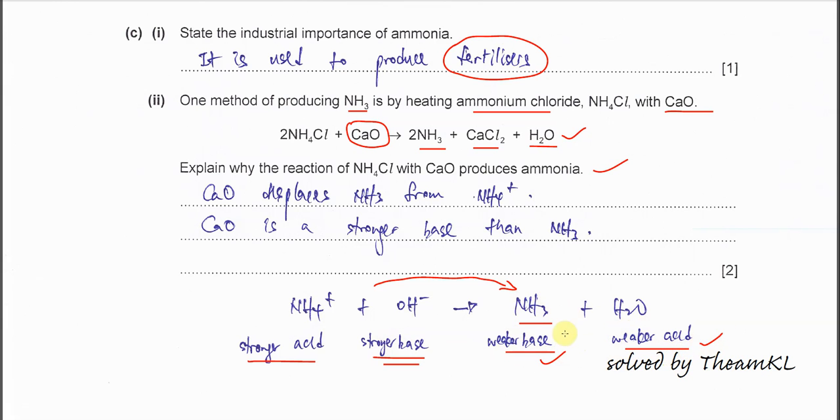If you understand what I'm telling you here, then you may understand this part. Calcium oxide displaces ammonia from ammonium. This one is easy to understand. It's just like hydroxide, it displaces the ammonia from ammonium. So ammonia forms from here. This one is the one that I want to tell you: calcium oxide is a stronger base than ammonia. It's actually same as this - hydroxide is a stronger base than ammonia.